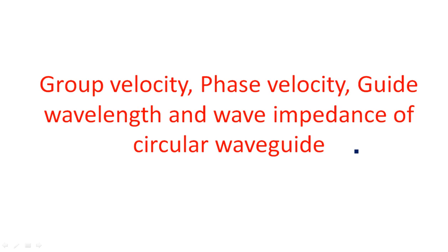Hi everyone. In this video, let us see what are the different parameters associated with circular waveguides, such as group velocity, phase velocity, guide wavelength, and wave impedance. All these parameters we have seen in the case of rectangular waveguides — the same and similar expressions we will be having in the case of circular waveguides also. Let us recall the definition of each parameter and the possible expressions, so that it is easy to calculate whenever asked in examinations.